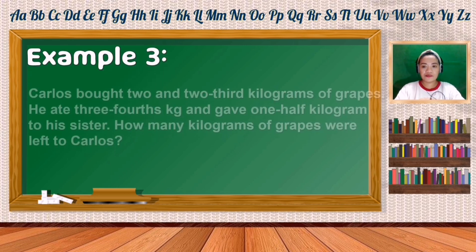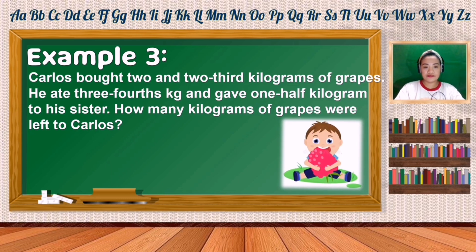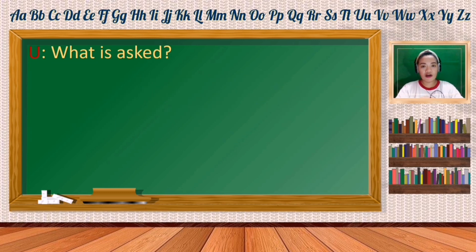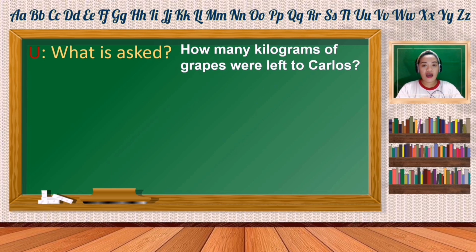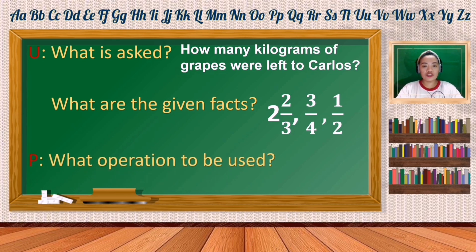Example number three. Carlos bought 2 and 2/3 kilograms of grapes. He ate 3/4 kilogram and gave 1/2 kilogram to his sister. How many kilograms of grapes were left for Carlos? What is asked: how many kilograms of grapes were left for Carlos? The given facts are 2 and 2/3, 3/4, and 1/2. The keyword is 'left', meaning we need to subtract.